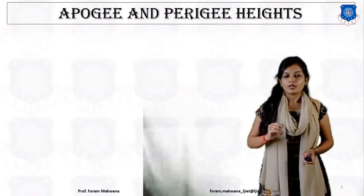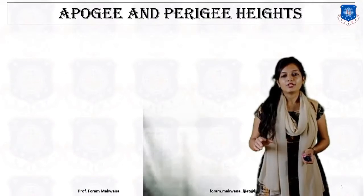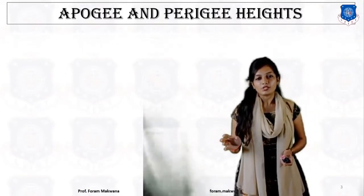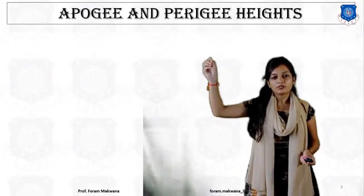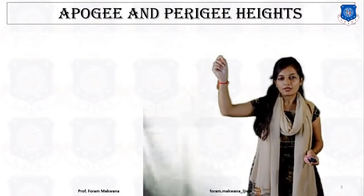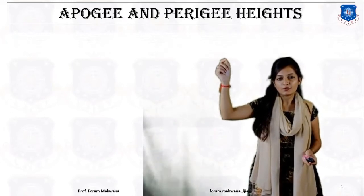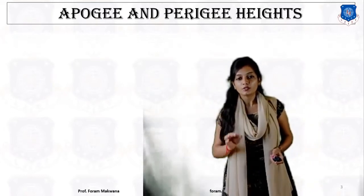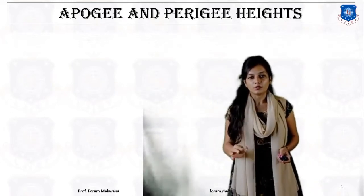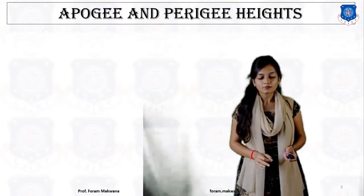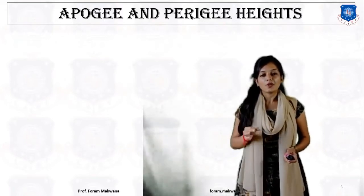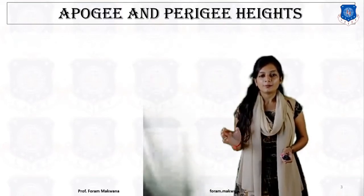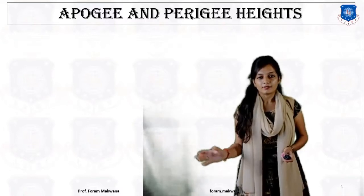We know the definitions of apogee and perigee. Apogee is the point which is farthest from the surface of the earth, and perigee is the point which is nearest to the surface of the earth. Now we are going to calculate the apogee and perigee height.